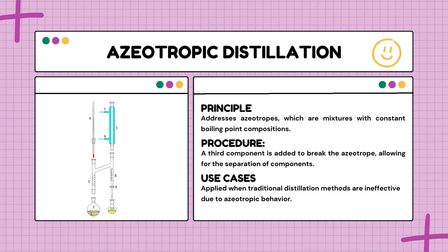In the procedure of azeotropic distillation, a third component is introduced that breaks the constant boiling point composition of the azeotrope. The added component changes the dynamics, breaking the azeotropic behavior. With the azeotrope disrupted, traditional distillation methods can now be applied more effectively, and the components can be separated according to their individual distinct boiling points. Azeotropic distillation is used when traditional distillation fails due to azeotropic behavior — when a mixture won't separate because of a constant boiling point.